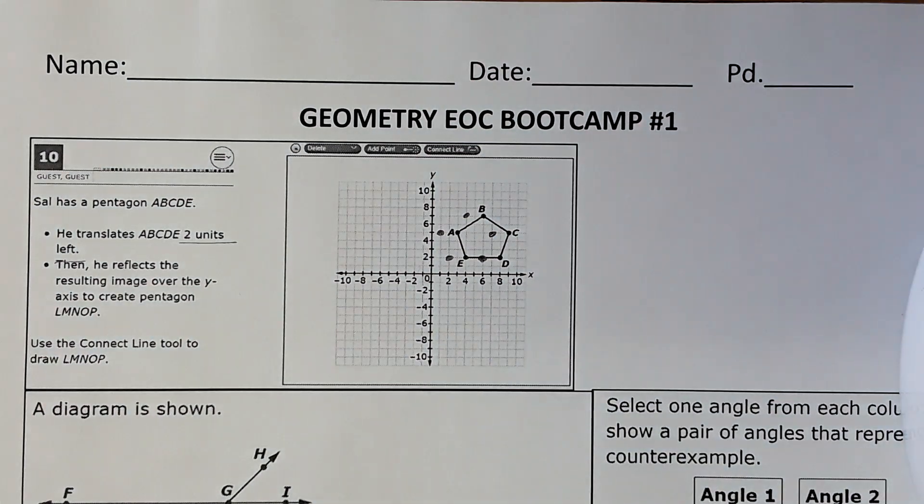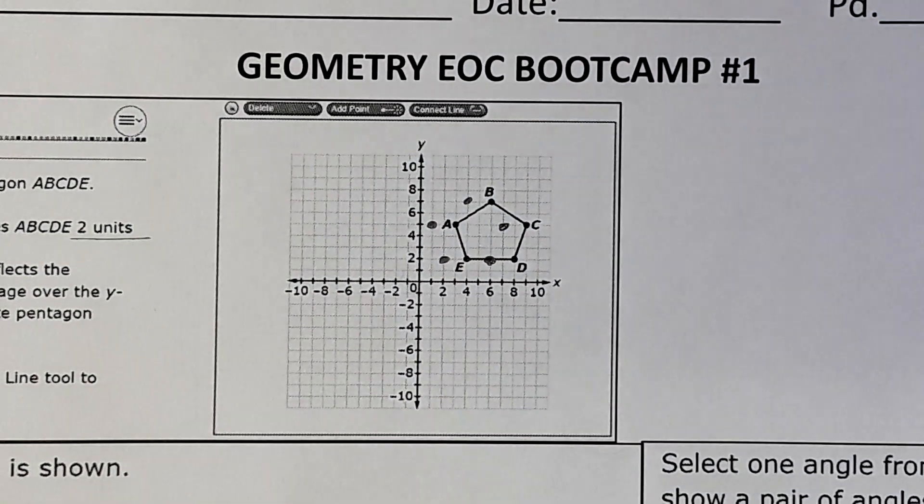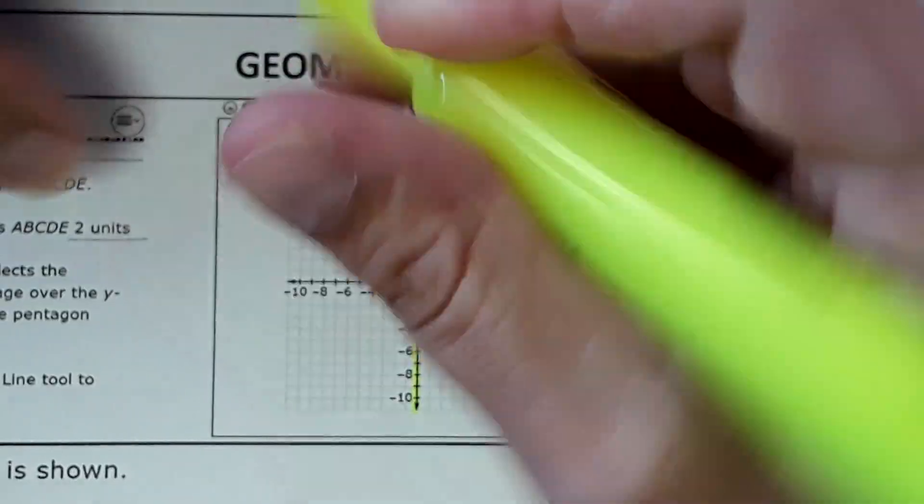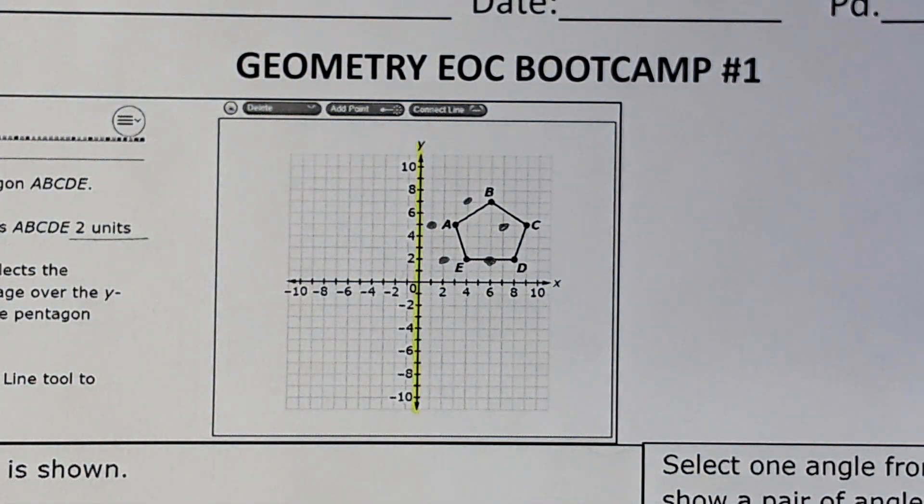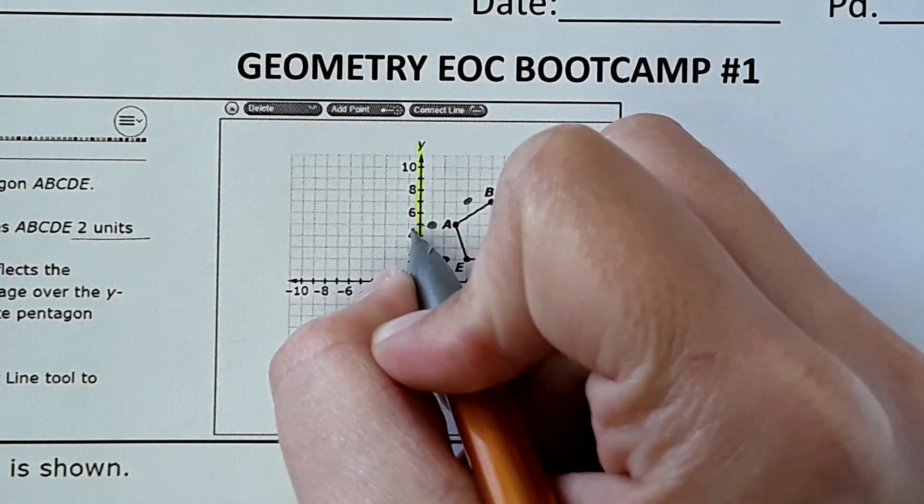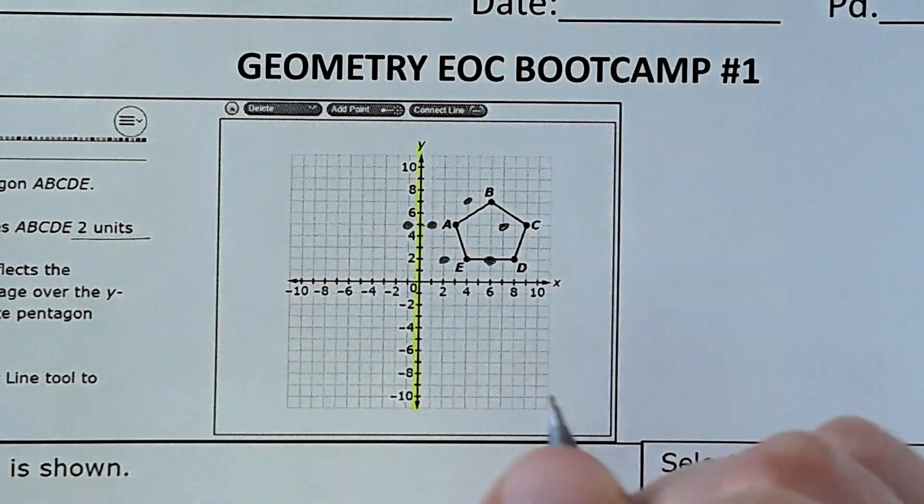So we've translated it two units to the left. Now the next thing it says is to reflect it over the y-axis, so you would identify the y-axis which is right here. Then reflect those points over it, so in reflecting it they would be the same distance just on the other side.